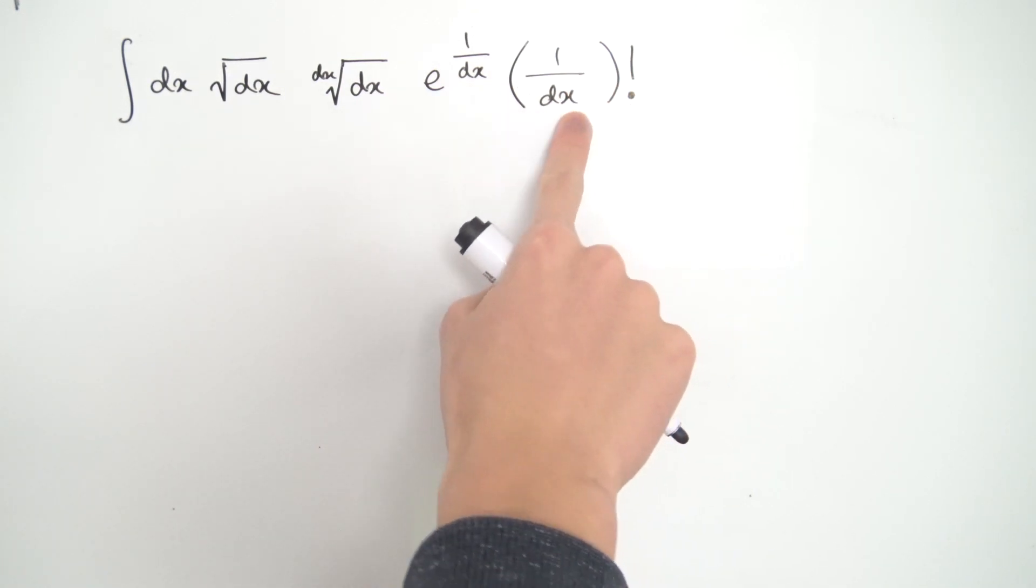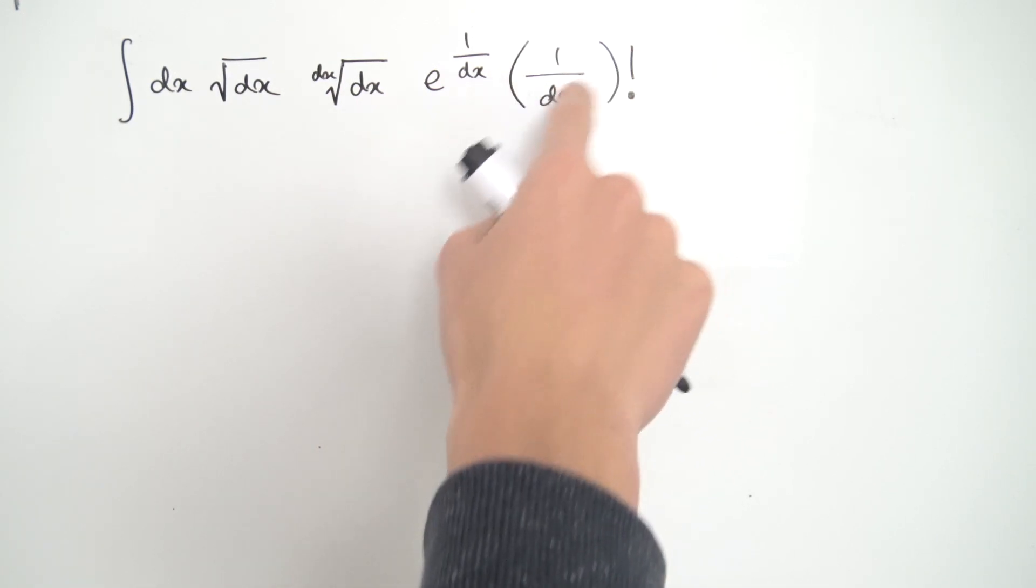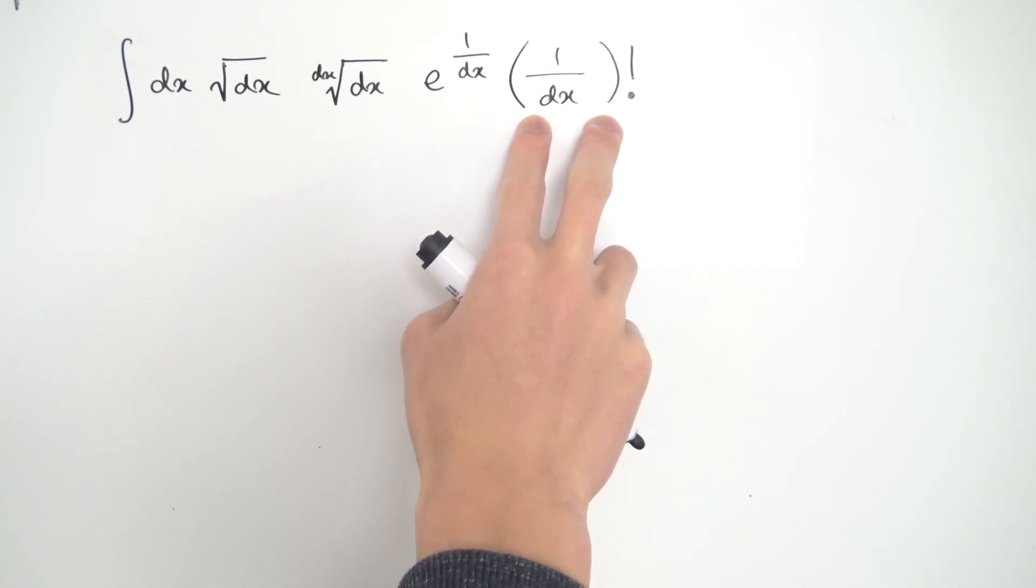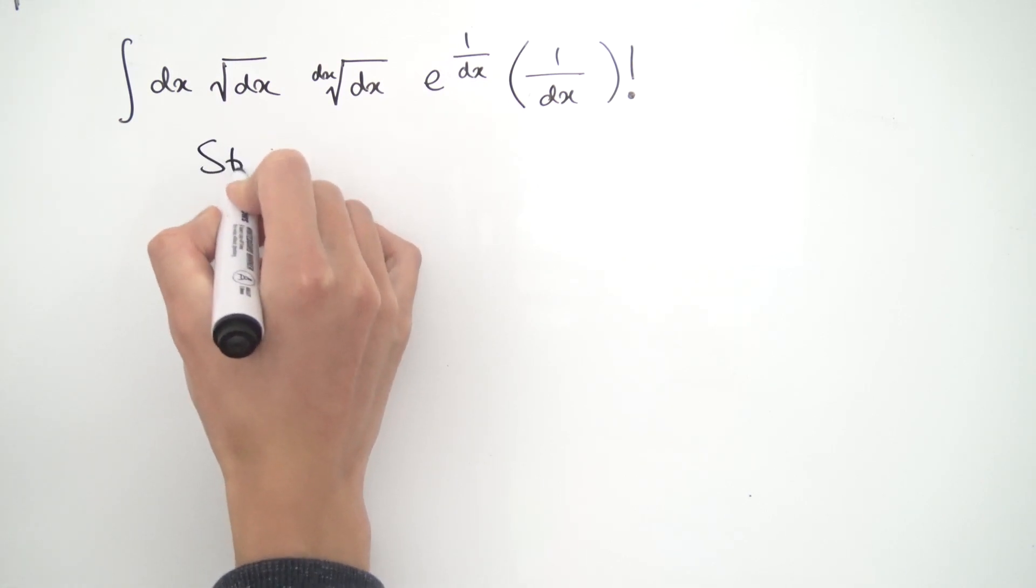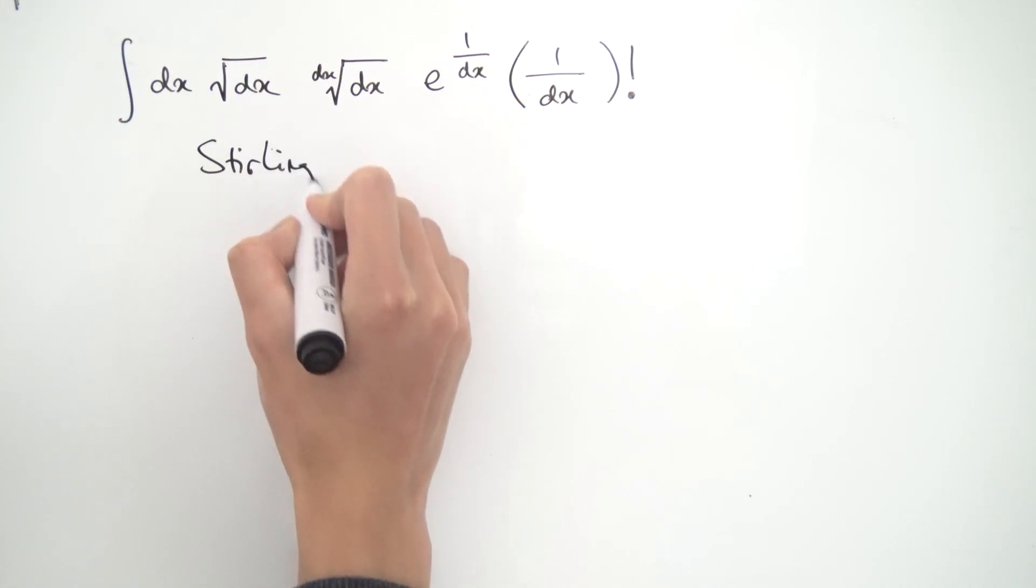And what happens if you have 1 divided by something that approaches 0? Well the whole thing approaches infinity. So we have something approaching infinity inside of this factorial, and we can actually use something called the Stirling approximation for that.